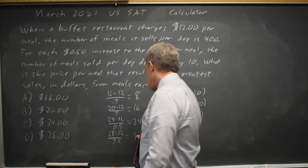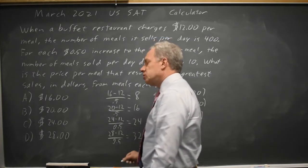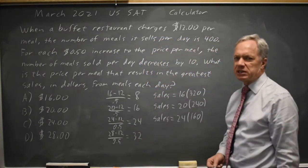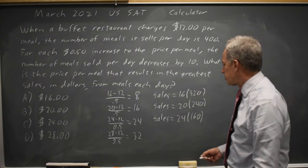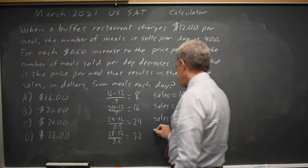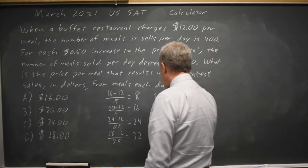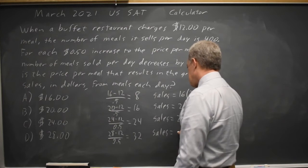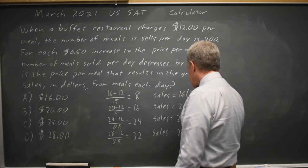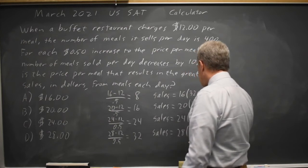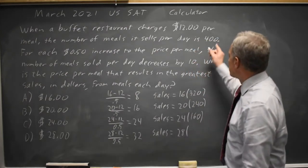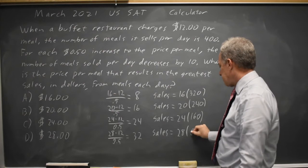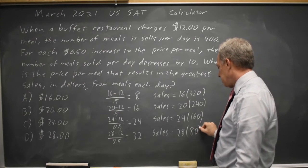That gives us 32 increments in the price, which means our sales go down by 320. So sales is $28 per meal times 400 minus 320 meals, which leaves 80 meals sold.